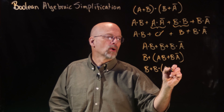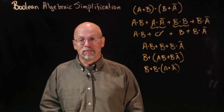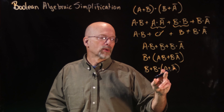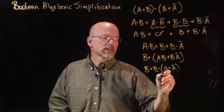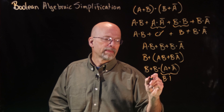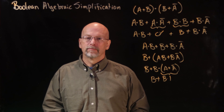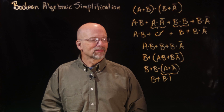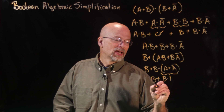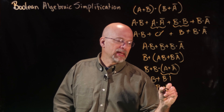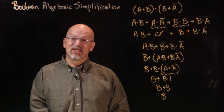I can pull out a B from those last two terms, giving B OR B·(A OR A-bar). There's a red flag: A OR A-bar — anything ORed with its inverse is always equal to one. So we get B OR (B AND 1). When you AND something with one, it becomes itself, giving B OR B. And when you OR something with itself, it becomes itself — so the result is B.